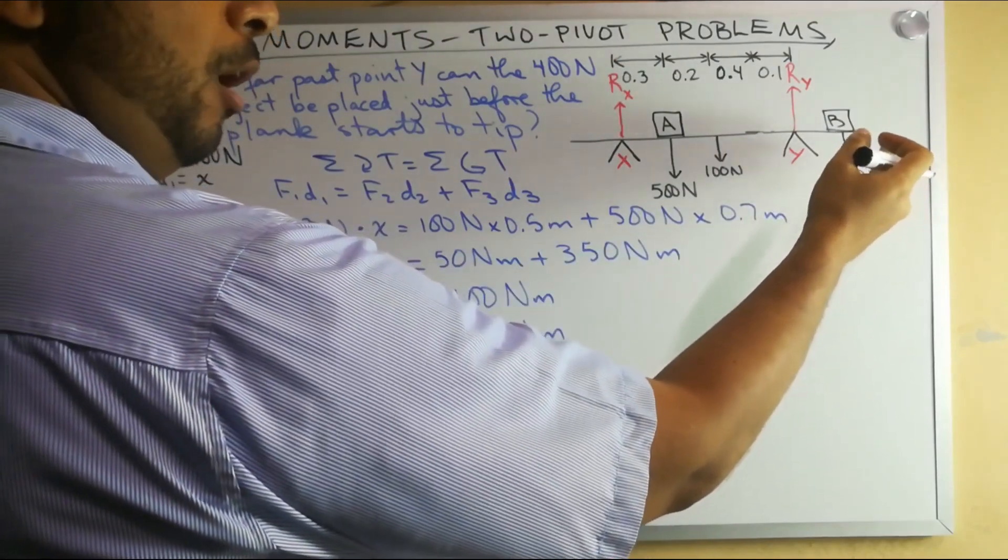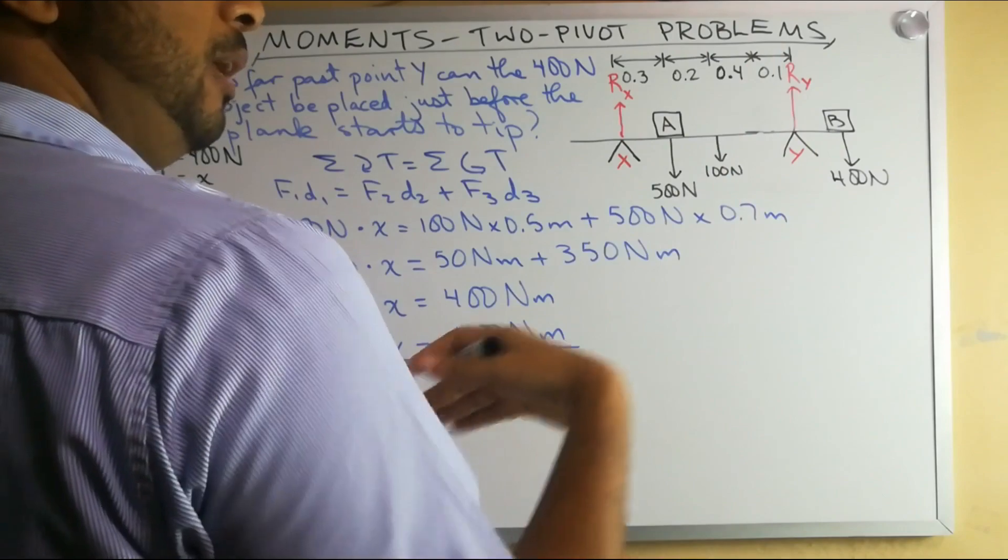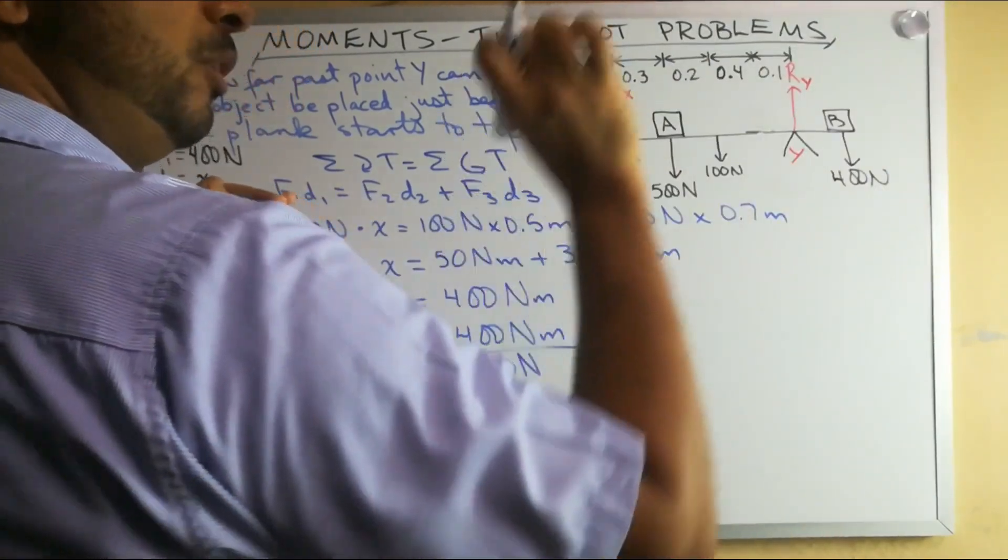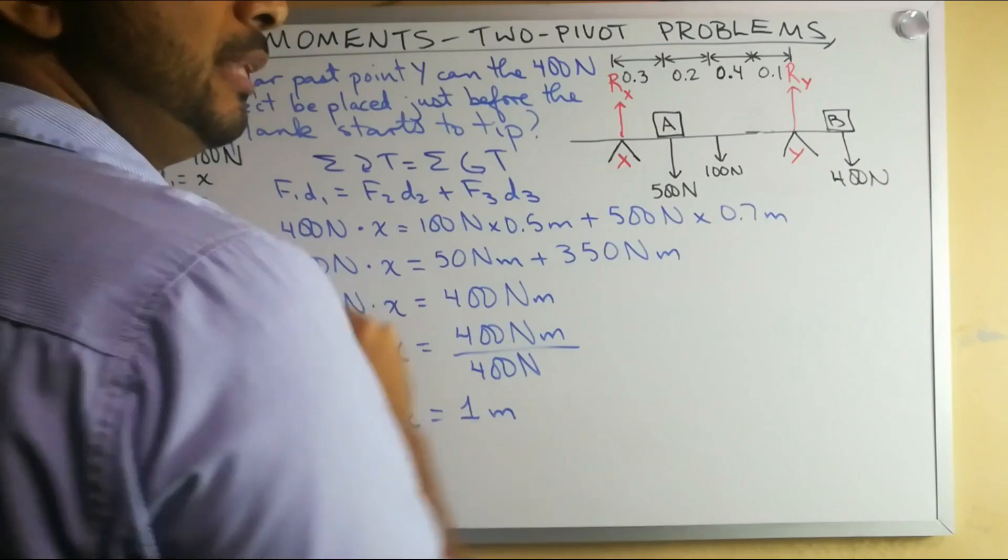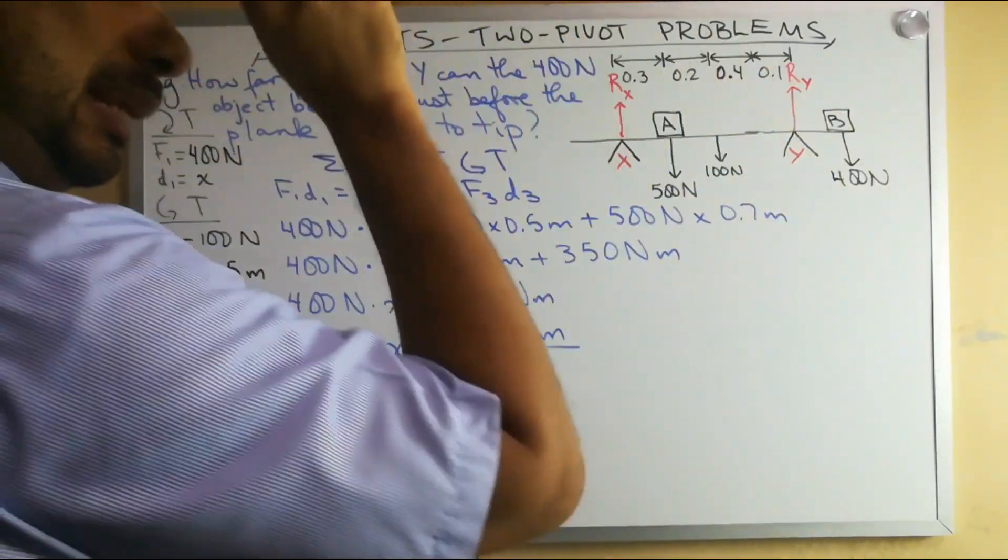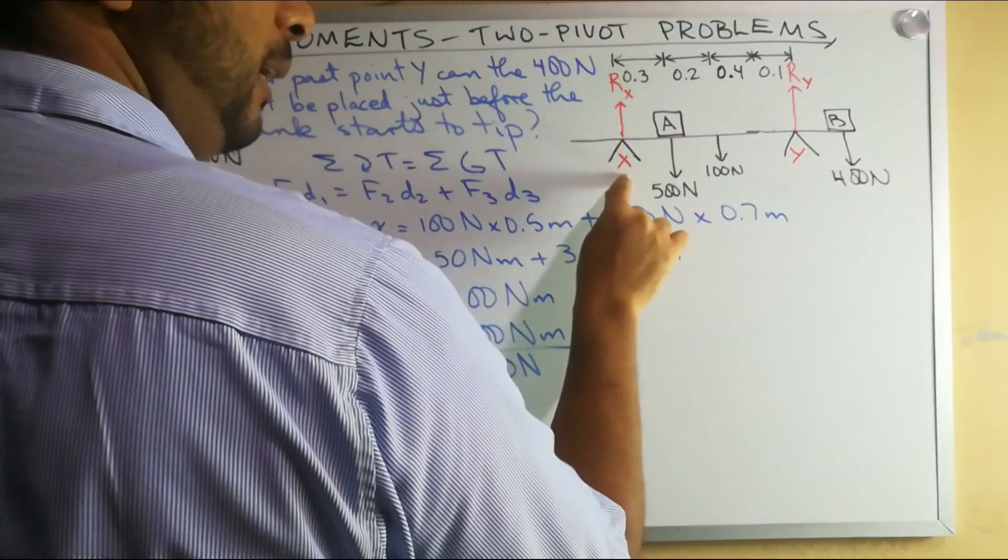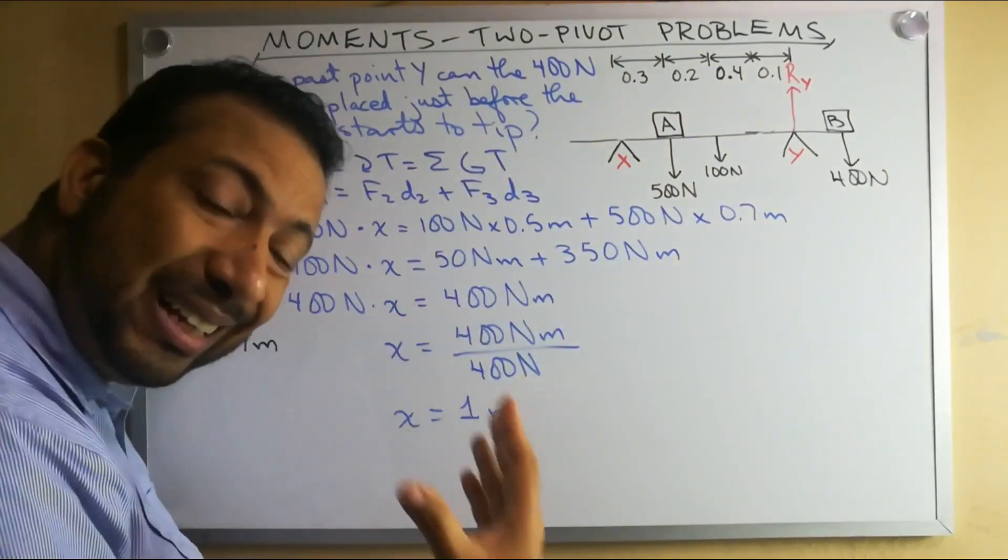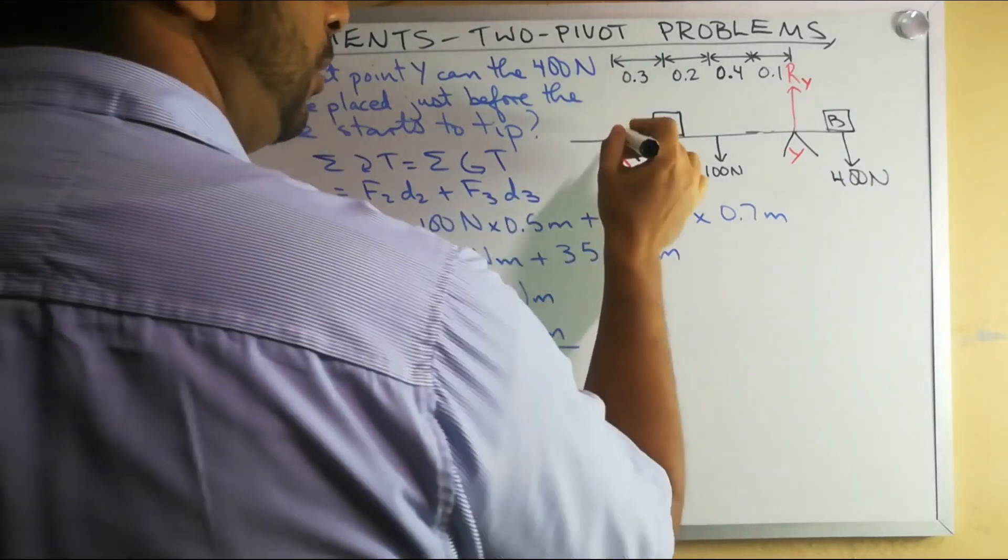The further we place object B towards the right of point Y, its turning effect will become greater and greater. Depending on how far we place it, its turning effect will not overcome the turning effect of these two. On the right hand side of point Y, object B has a clockwise turning effect. On the left hand side, these are anti-clockwise and they will balance out, but not if we take point B past a certain point. If we put it too far, then it will cause it to tip over. So exactly how far can we place object B before that starts to happen?